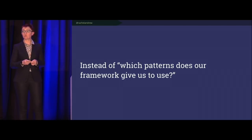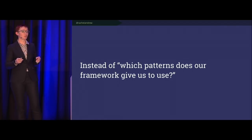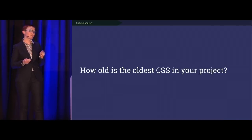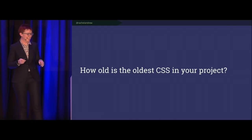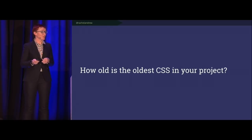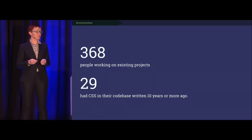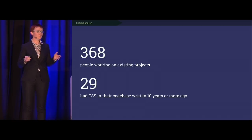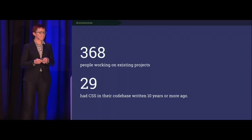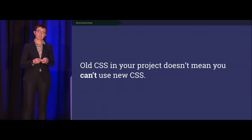I know a lot of you are thinking: this is fine if you work on a shiny new thing, but I work on an existing codebase with old code. Who has CSS in their project written more than five years ago? More than ten? Tables for layout? About 8% of people in my survey had code in the codebase written more than ten years ago. Standing up and saying 'use this marvelous new stuff' is all very well — but how does it work when you're just working on components in a bigger system?